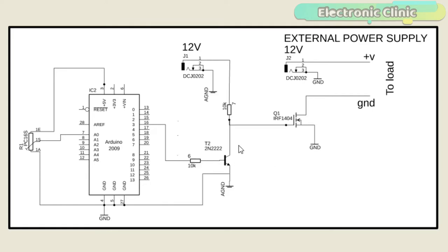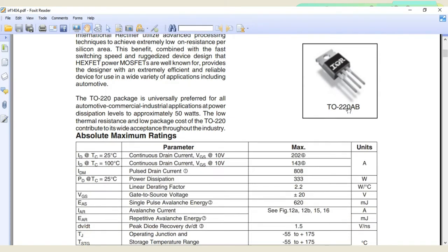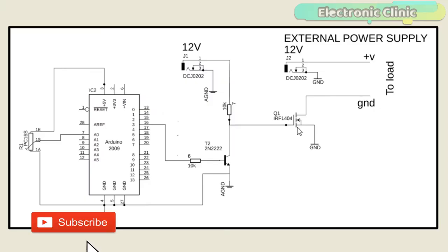The IRF-1404 is a power MOSFET, capable of handling fast switching and can be used with voltage up to 40V, and can handle currents up to 202A at a temperature of 25°C. Pin number one is the gate, pin number two is the drain, and pin number three is the source.